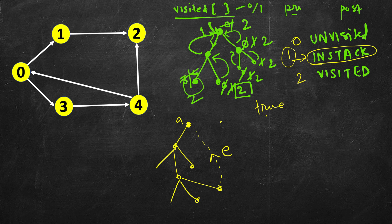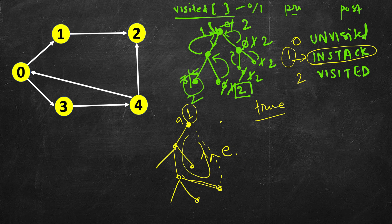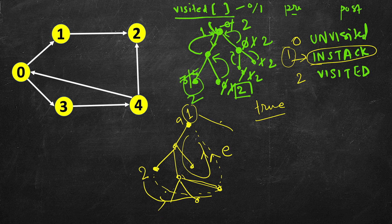Why? Because from that node we came here, and we are not done with it yet — that's why its state is 1 (in stack). We found an edge going back to it, so there is a cycle. If the edge goes to a node whose state is 2 (already fully explored), there is no need to worry.